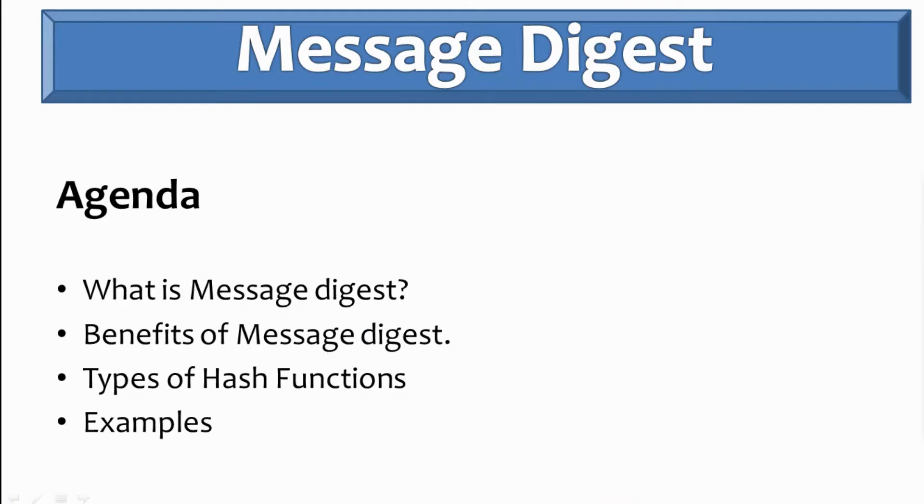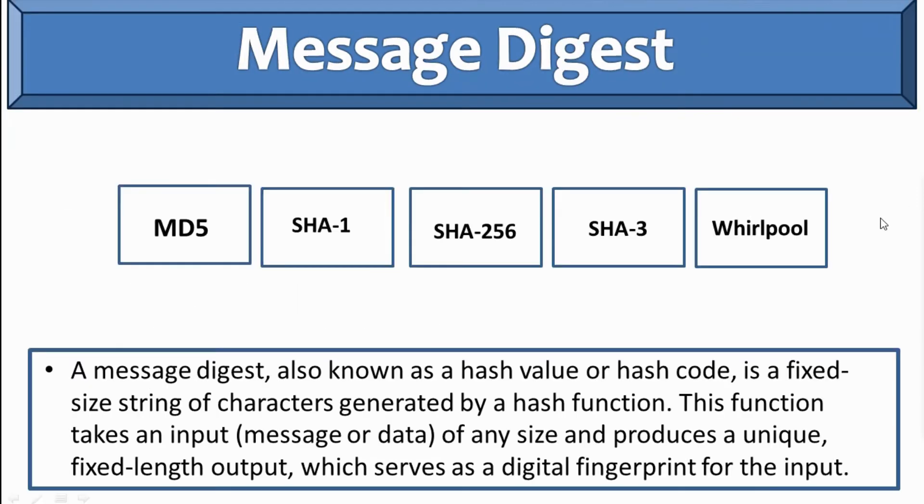So let's first understand what is message digest. A message digest, also known as hash value or hash code, is a fixed size string of characters generated by a hash function. This function takes an input like message or data of any size and produces a unique fixed length output which serves as a digital fingerprint for the output.